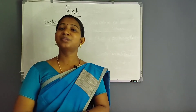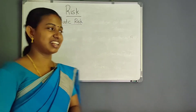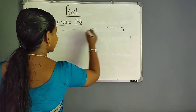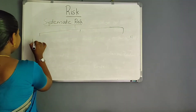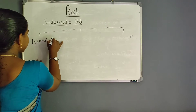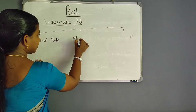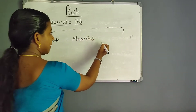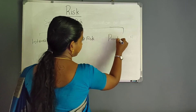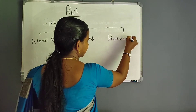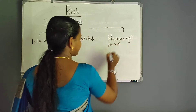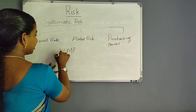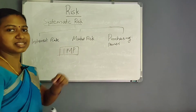There are three sub-divisions of systematic risk: interest rate risk, market risk, and purchasing power risk. Purchasing power risk is also known as inflation risk, abbreviated as IMP. Systematic risk is important with these three components.